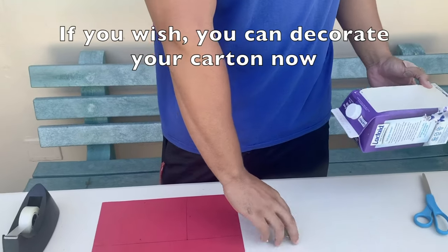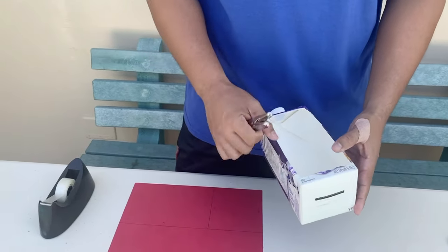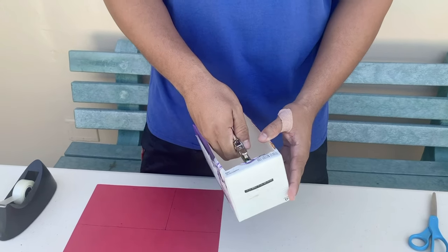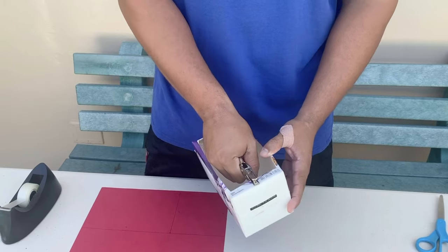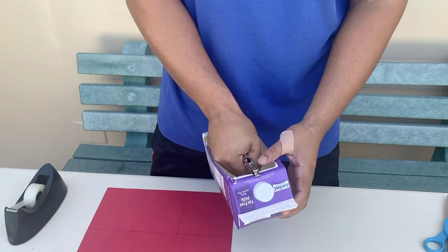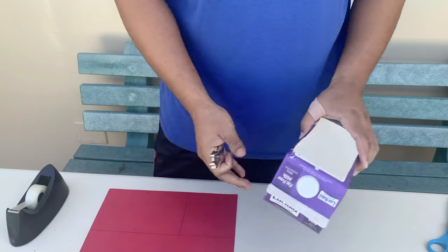Next we're going to take the hole puncher and we're going to punch a couple of holes. We're going to punch one here and here, and these are going to be for the sail mast, which are the pencils or chopsticks.